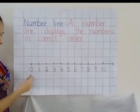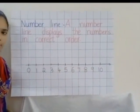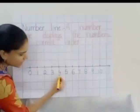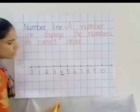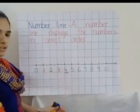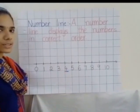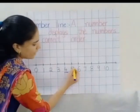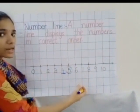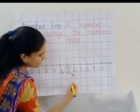Now children, this number line is from 0 to 10. Now for example let us select one number. For example let us take 4. Now look at this number line and tell me which number comes after 4. Here we have 4. Which number comes after 4? Yes, 5. To your right side always it will be your after number children. So 5 is the after number.